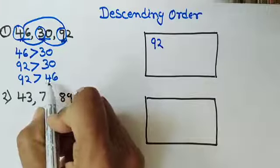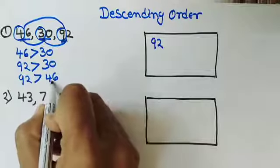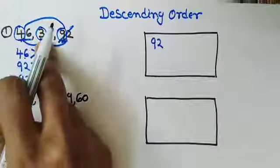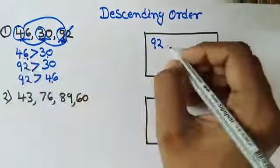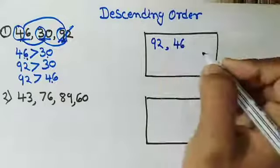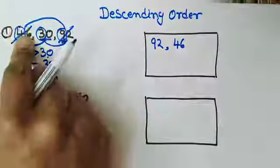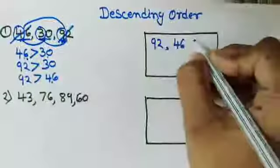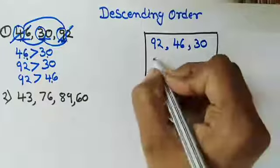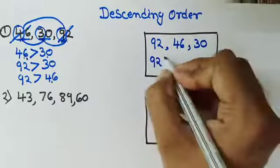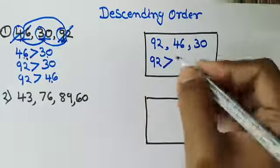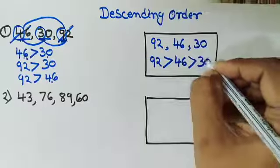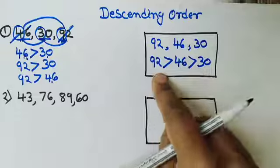So the next number will be 46, because out of 46 and 30 — cutting 92 first — 46 is the greater number. So we write 46 next. Now we will again cut 46, because we have written this number. The remaining number is 30, which is the smallest number. So how to write this in descending order: 92 is the greatest, so we put the greater than sign, then 46 — and 46 is also greater than 30. All these numbers are now in descending order.